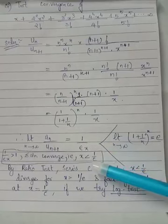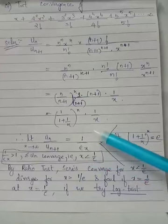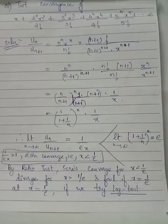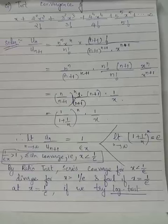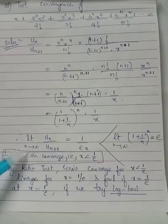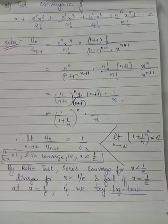By ratio test, whenever this limiting value is greater than 1, the series will converge. Therefore, when 1/(ex) > 1, the given series will converge, or equivalently when x < 1/e. This is because you can cross-multiply x to the RHS, then you are left with 1/e on the LHS. From where you get the inequality: the given series is convergent for x < 1/e.